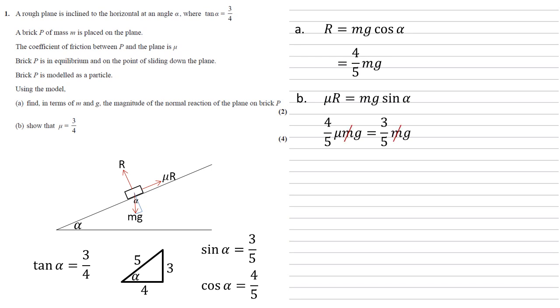Well, both sides have got m on them, we can cancel those out. We can cancel out the g's, so we've got four fifths mu equals three fifths. Multiplying both sides by five, we get four mu equals three, and dividing by four, we get mu equals three quarters, as required.